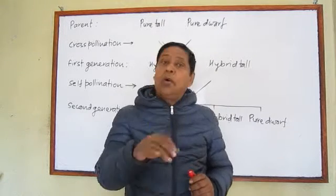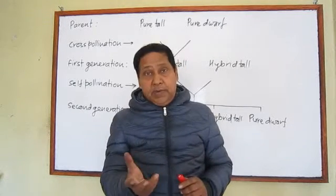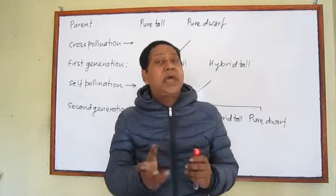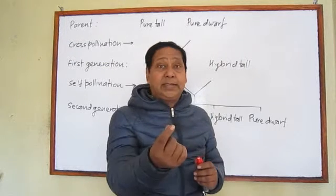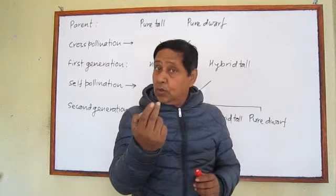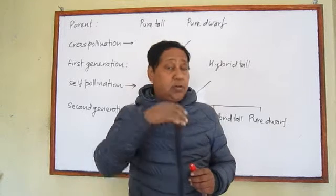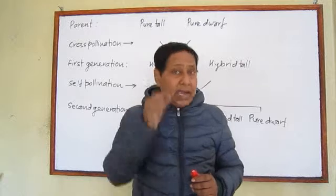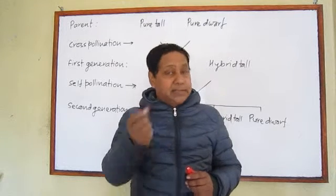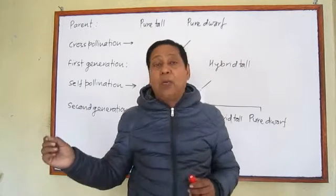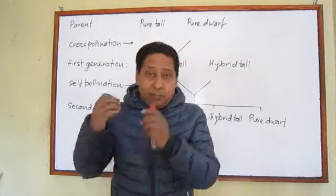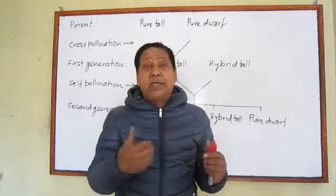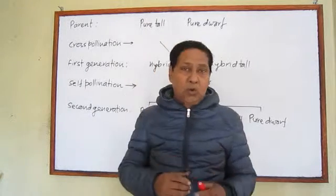Mono-hybrid cross. According to Mendel's experiment, he did many crosses between pea plants. Sometimes he took only one character, sometimes two characters, sometimes more than two. If we are taking only one character and observing the results from this cross, then that is called a mono-hybrid cross.